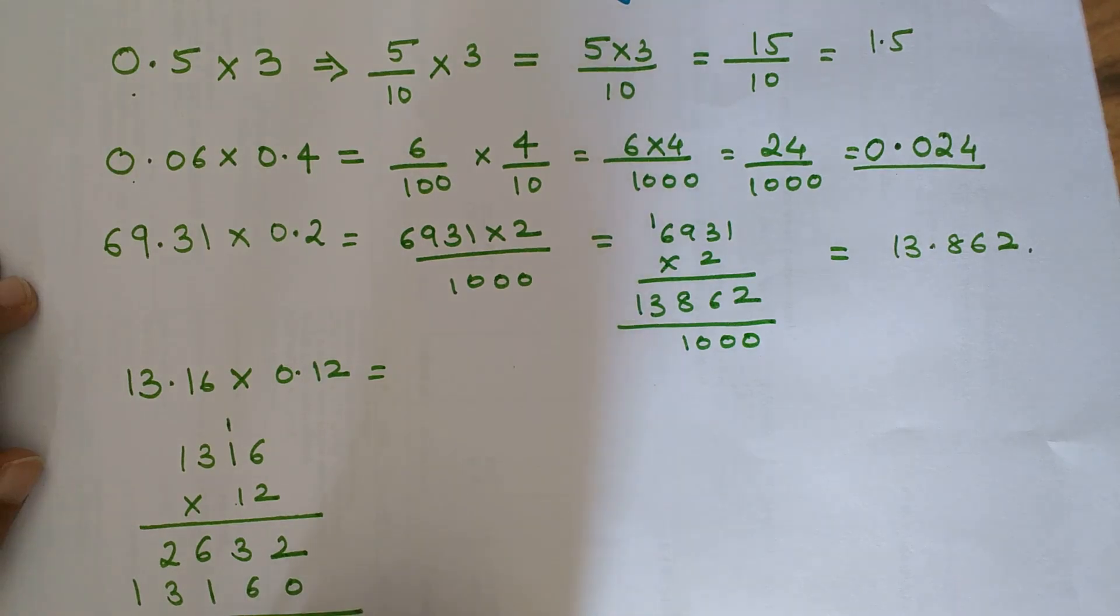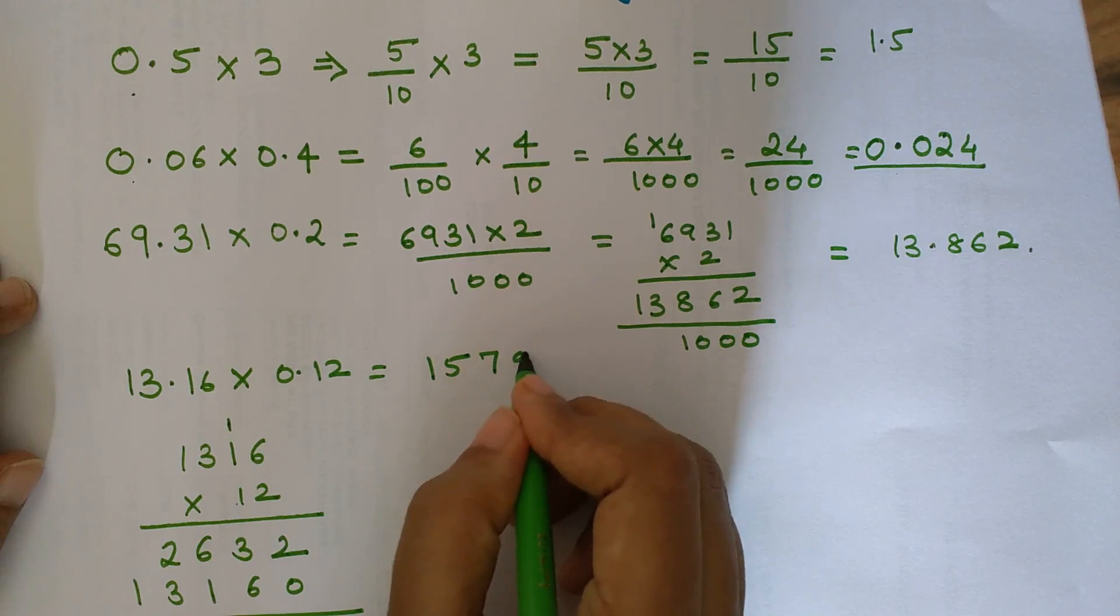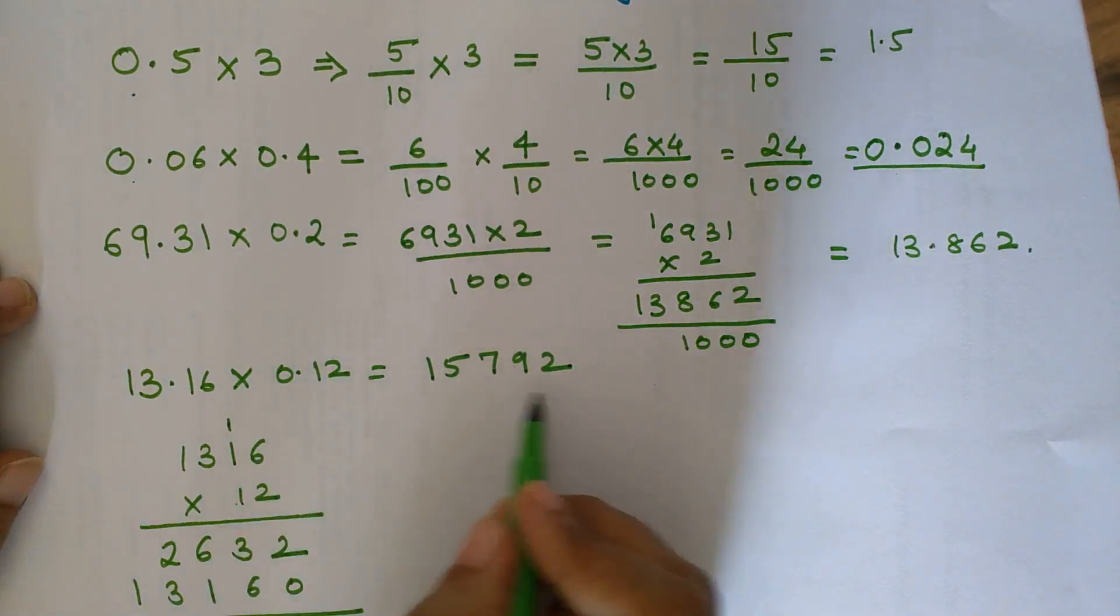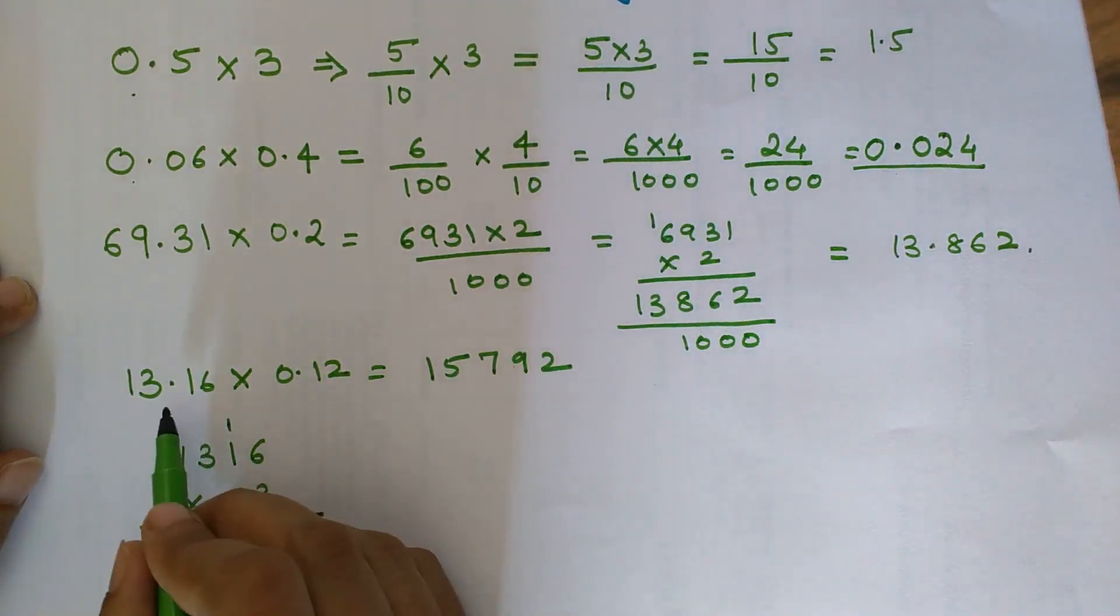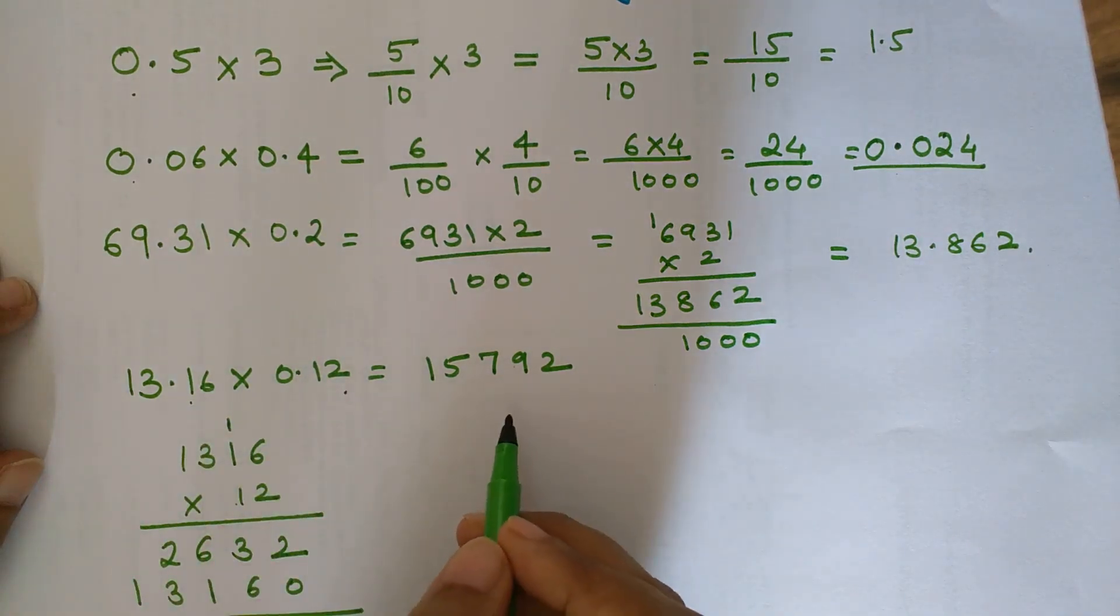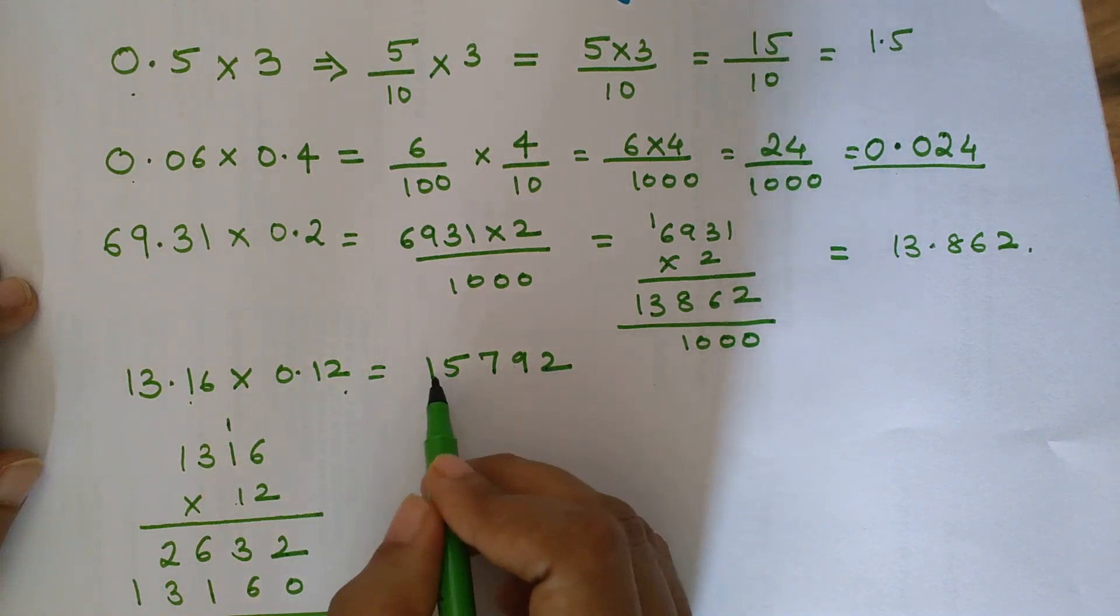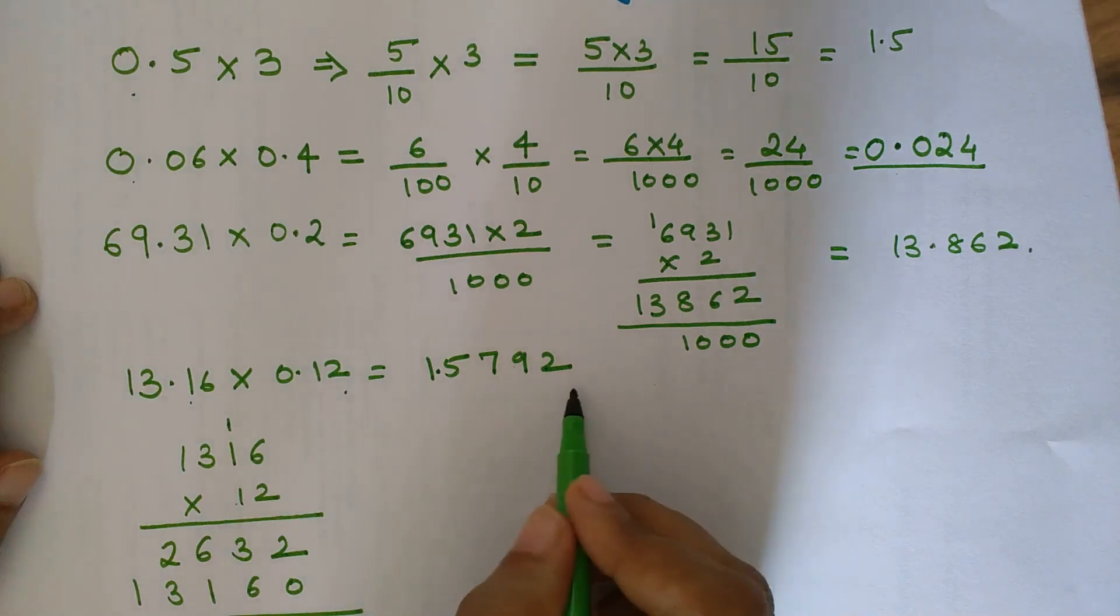Now let's add them. We get 2, 9, 6 plus 1 is 7, 2 plus 3 is 5, 0 plus 1 is 1. So the final answer is 15792. This is not my final answer because I have to put the decimal point. We have 2 and 2, so 4 digits total after the decimal point. Count 4 digits from the right: 1, 2, 3, 4. The answer is 1.5792.